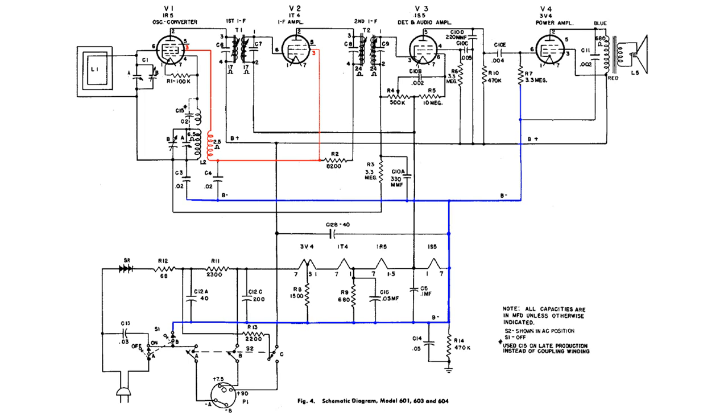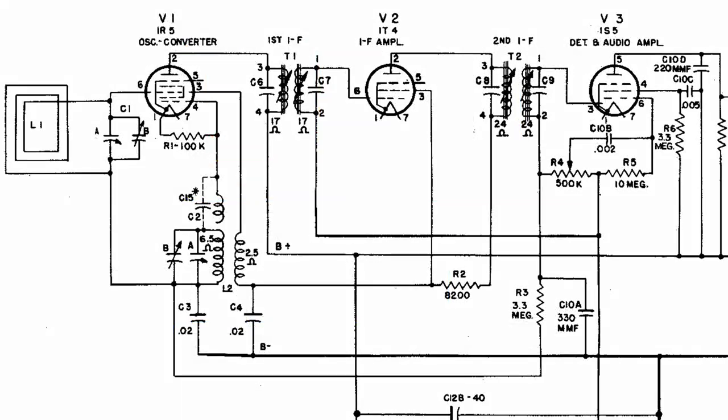So I started looking at the wiring diagram a little closer, and I thought, the B plus has to be coming through R2, that 8,200 ohm resistor. And then I followed it up to T2, which is the second IF, and then it goes over to the plate. And I don't see a B plus connection anywhere.